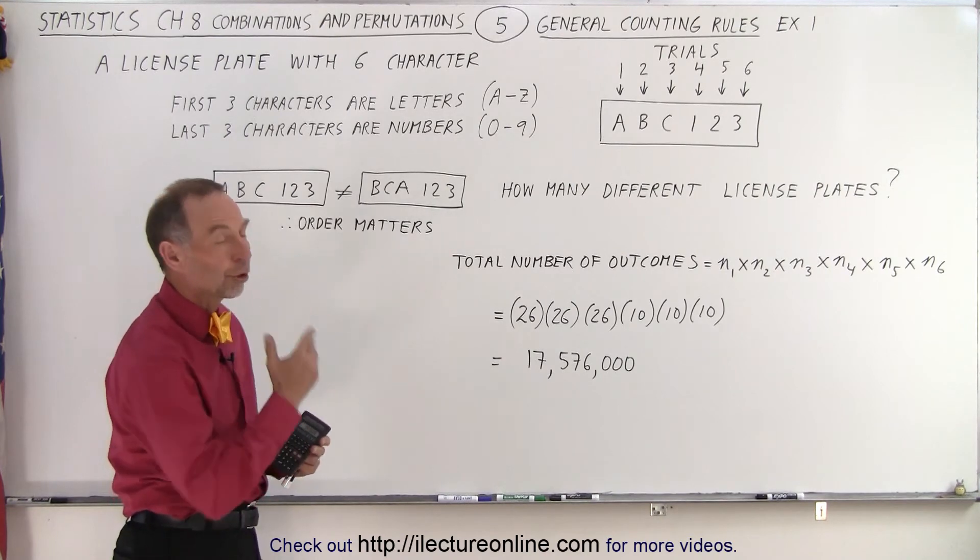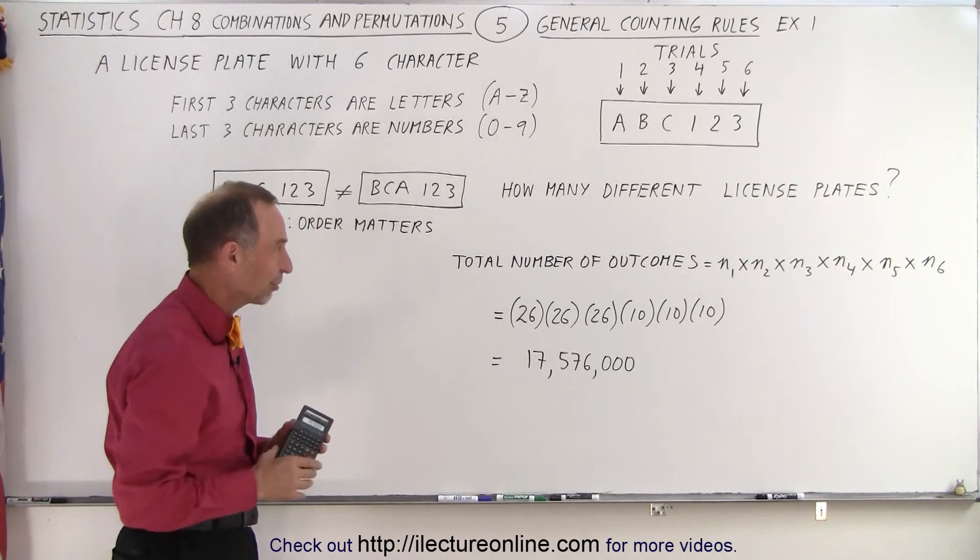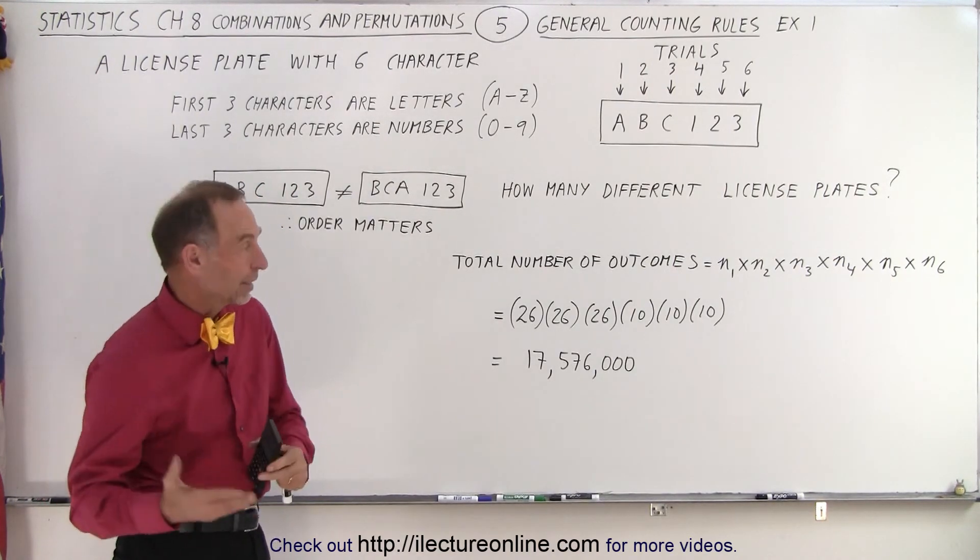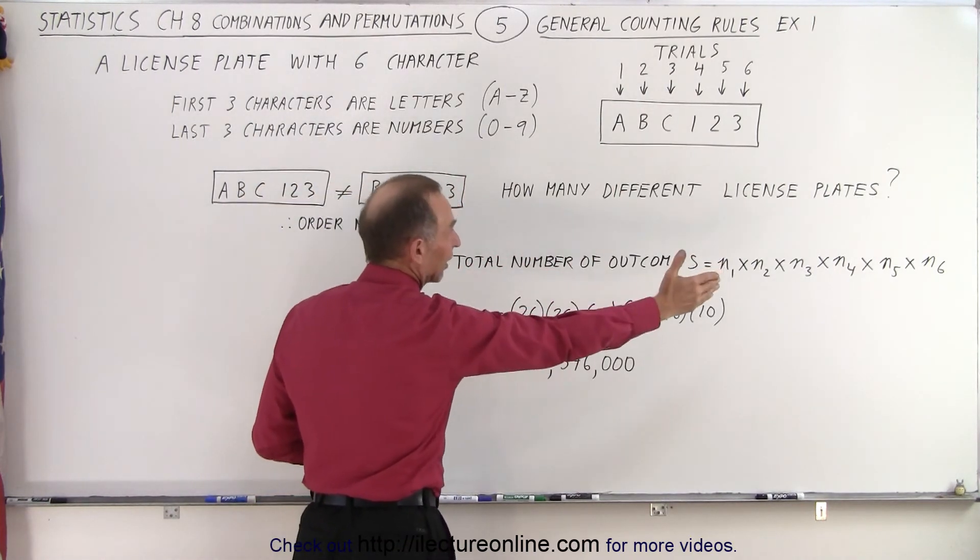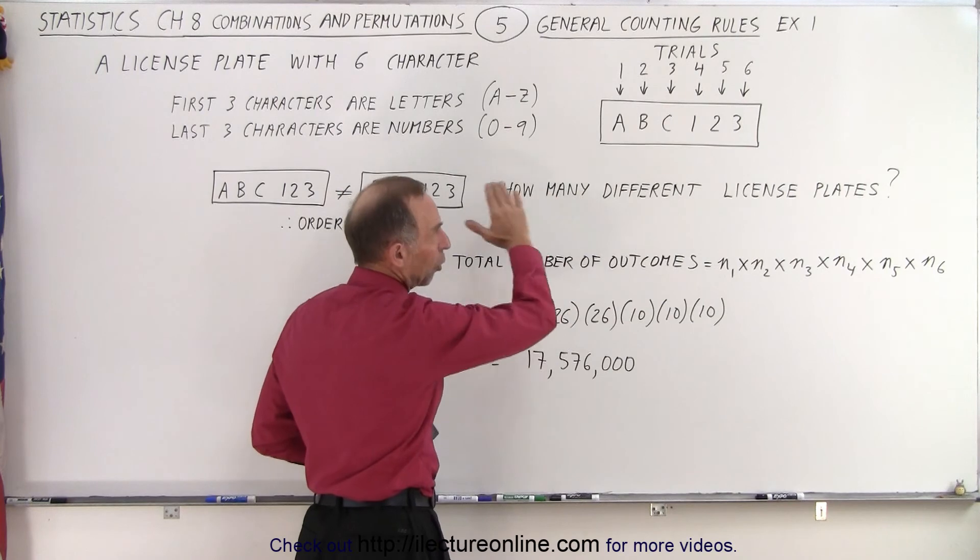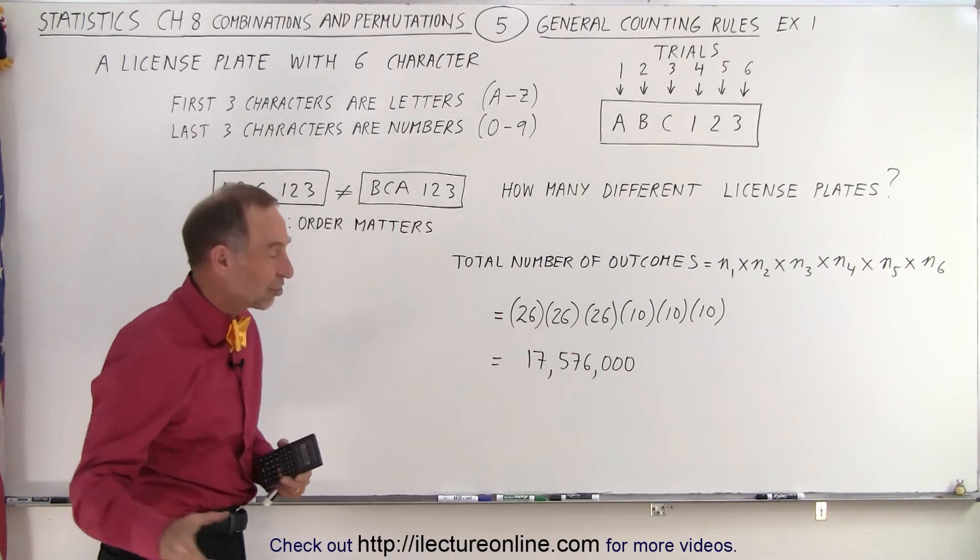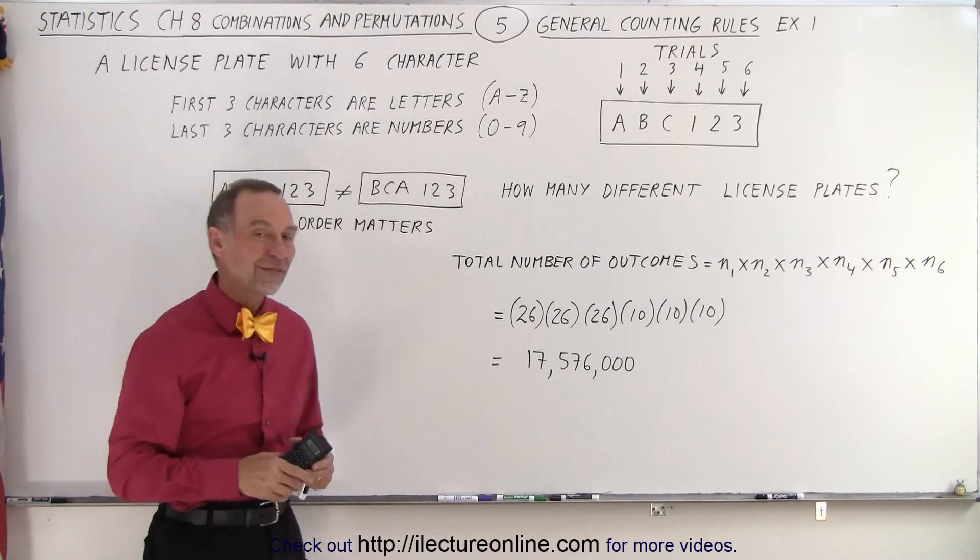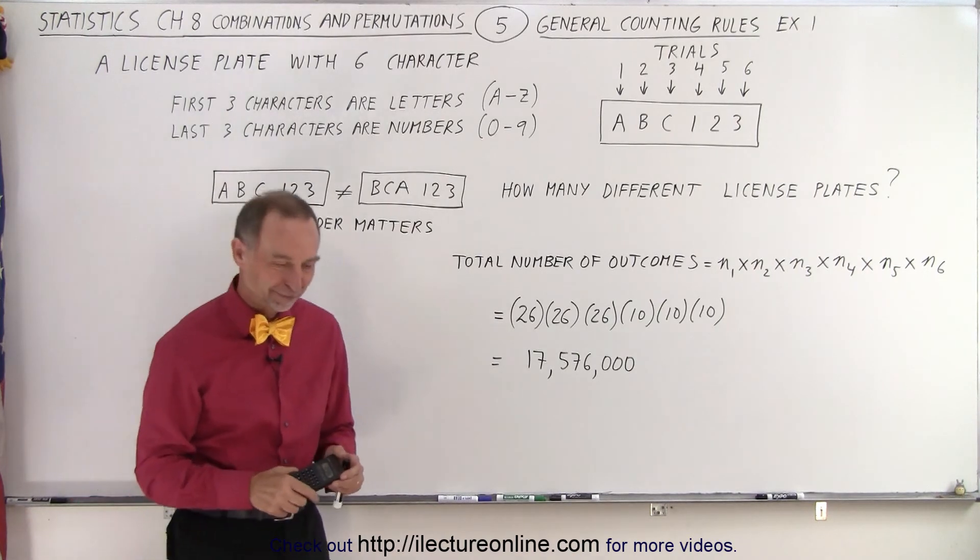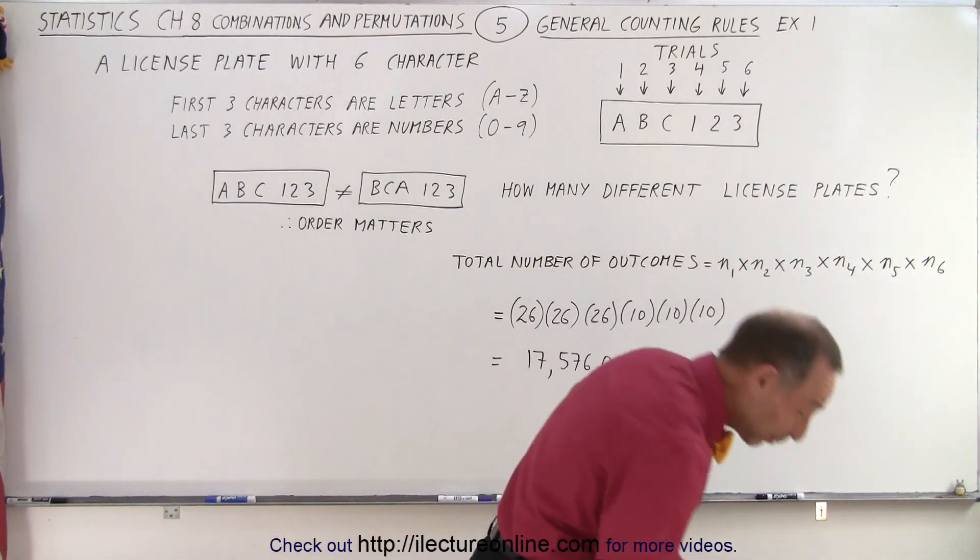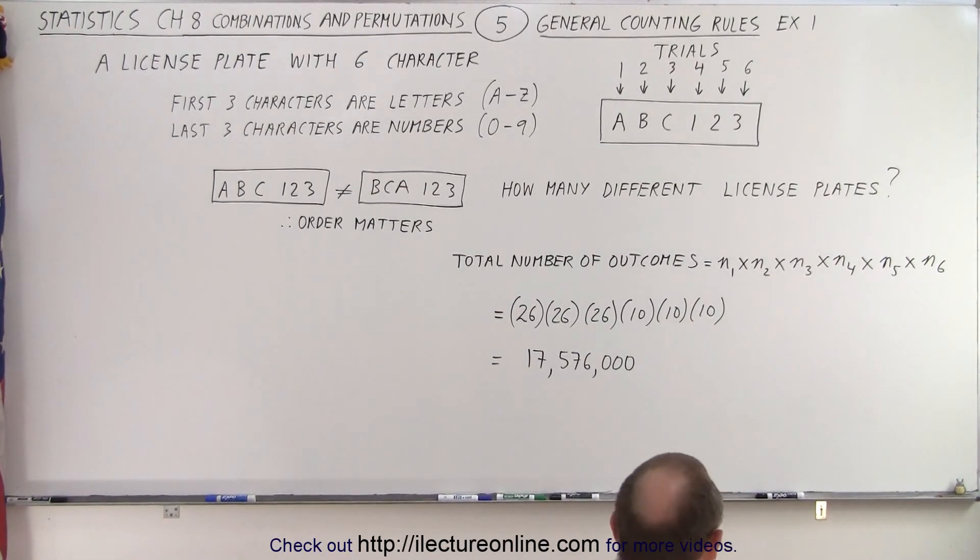Now we didn't use that equation that we saw in the beginning in some of the first videos. We simply used the general counting rule that we have six trials, six different outcomes. The total number of outcomes of all the trials, all six characters in the license plate, is simply the product of the outcomes of each. And that ends up with the number 17 million, 576 thousand and that is how it's done.